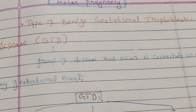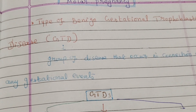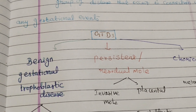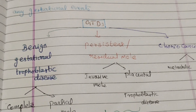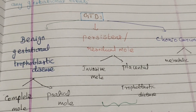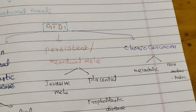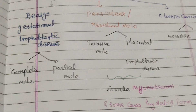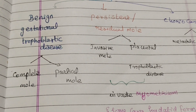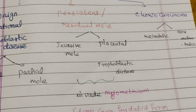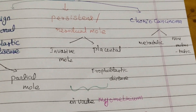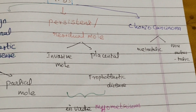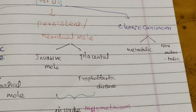Gestational trophoblastic disease is a group of diseases that occur in connection with any gestational event. They are broadly divided into three groups: benign gestational trophoblastic disease — which includes molar pregnancy — persistent or residual mole, and choriocarcinoma. The benign molar pregnancy is further divided into complete mole and partial mole.